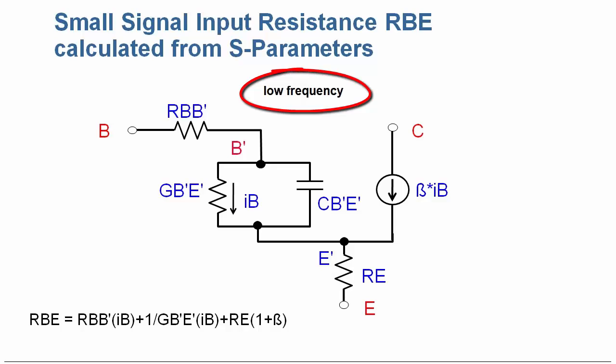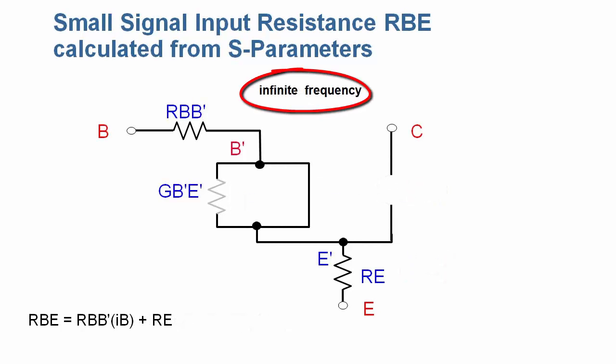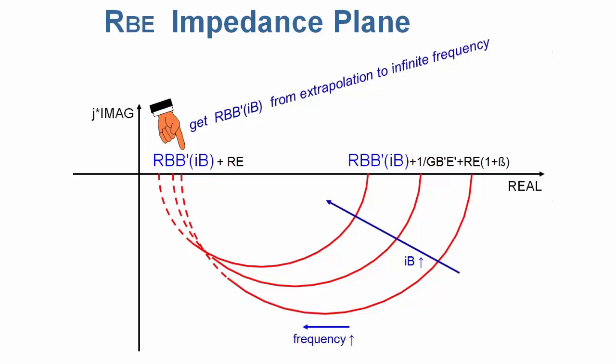At low frequencies, the input resistance is the chain of base resistor RBB, the input conductivity GBE and emitter resistor. The capacitance CBE can be considered an open. At infinite frequency, CBE shorts the conductance GBE and the input resistance becomes RBB plus RE. Therefore, the measured S-parameters are converted to H-parameters, with H11 representing the input impedance. This H11 is plotted here. From the frequency extrapolation to infinity, the intercept with the x-axis is equal to RBB plus RE. And from these intercepts we get a trace to which the RBB model equation has to be fitted, as shown here.